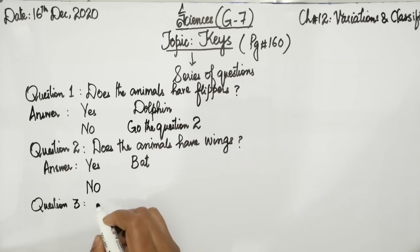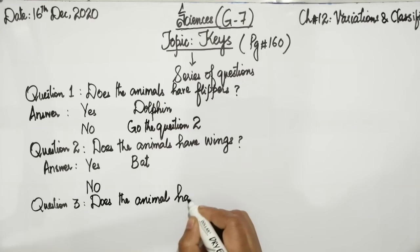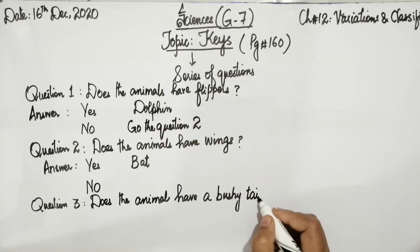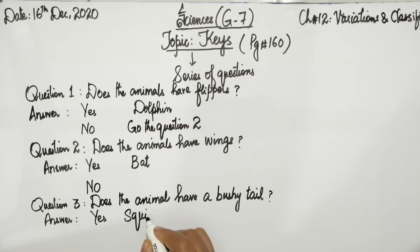Question 3 is: Does the animal have a bushy tail? If yes, it is Squirrel. If you go to animal number D, the answer will be no because this animal doesn't have a bushy tail, so it doesn't come in this category.